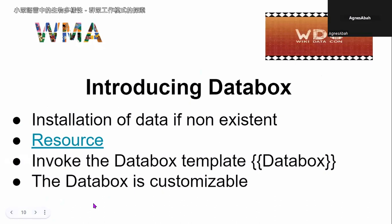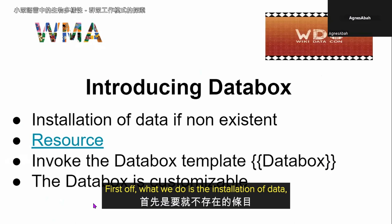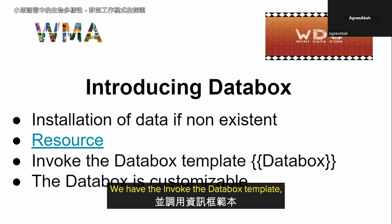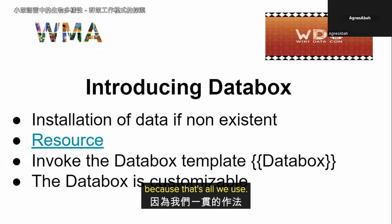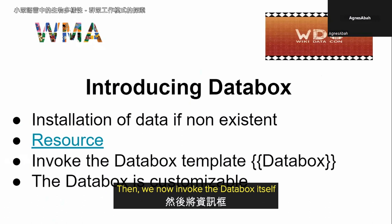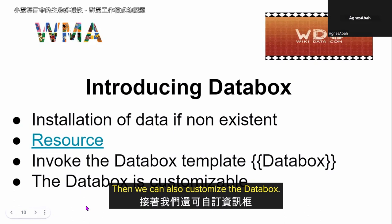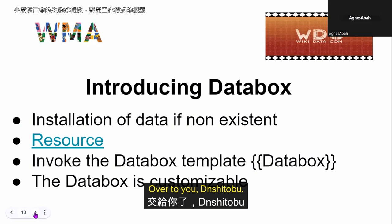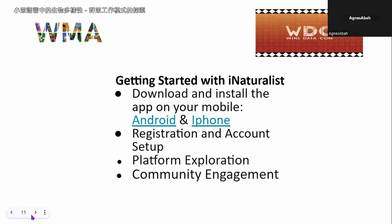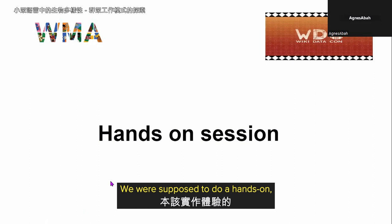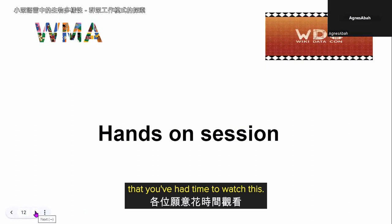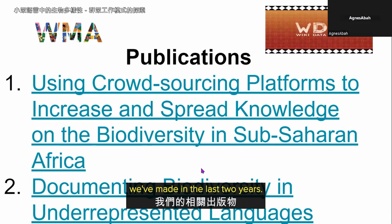Regarding the introduction to Databox: the first step is installation of the databox template if it is non-existent. We use a stub maker to invoke the databox template, which then brings the databox to life on our Wikipedia articles about biodiversity. The databox can also be customized.